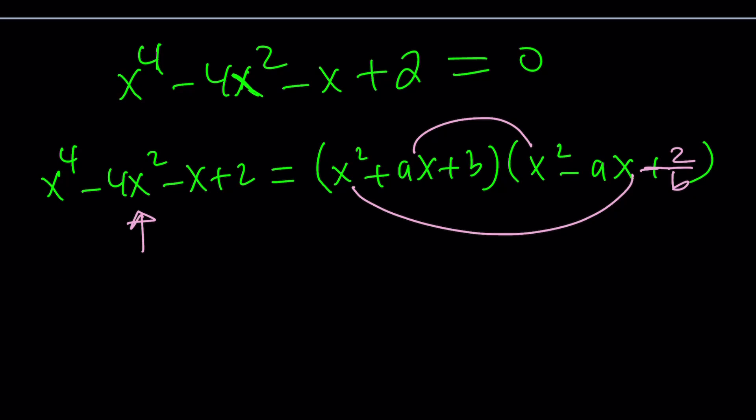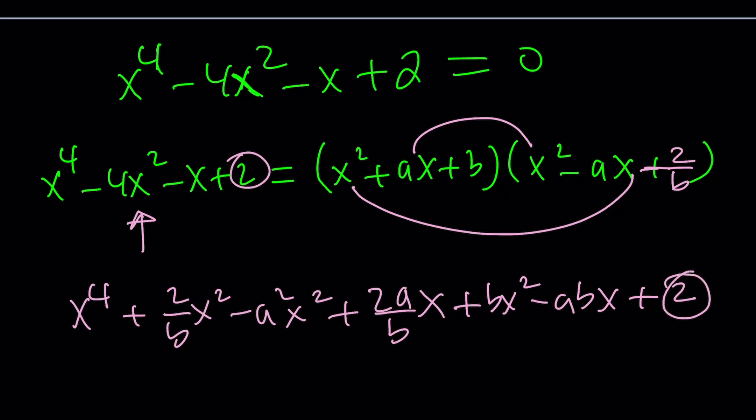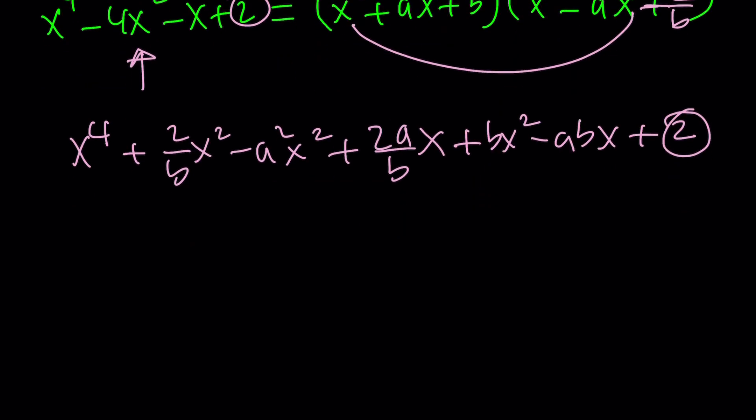Let's go ahead and distribute one more time. x to the 4th, you can exercise, right? Plus 2 over b x squared. And then that's it. And then ax cubed is going to cancel out, so minus a squared x squared plus 2a over b multiplied by x. And then finally bx squared minus abx plus 2. Of course, the 2s are going to agree. That's the constant term, so we don't have to worry about it. We only have two variables, by the way. Notice that we have only two variables.